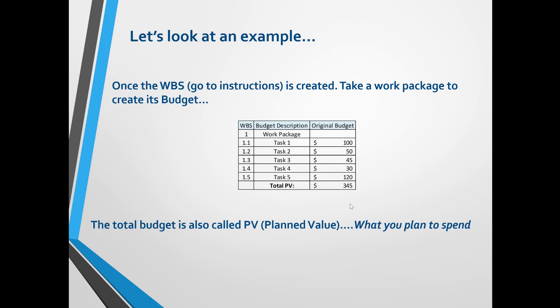We start with an example of a work package and its budget. This budget is placed at the beginning of the project during the planning phase, so it is considered the baseline or original budget. The total budget amount of the work package is the Planned Value, otherwise known as PV.